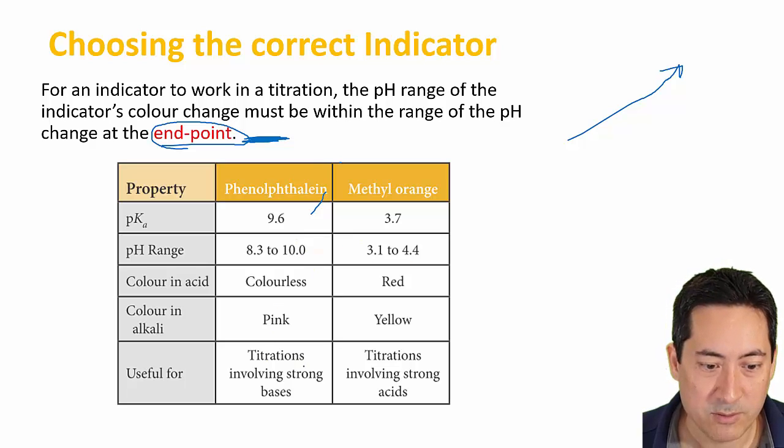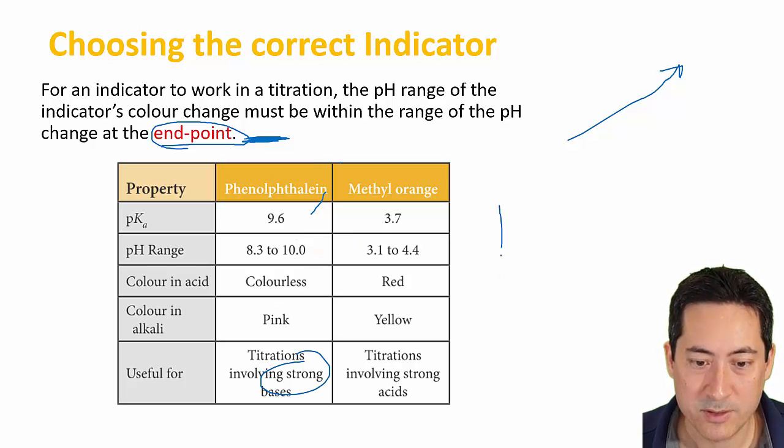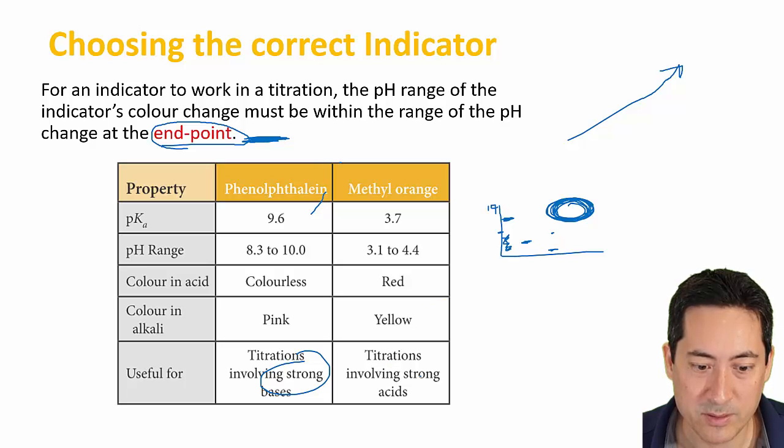With strong bases, the pH will be up here around 14, versus about 7. Because the pKa is higher, you can't use phenolphthalein with weak bases, so it has to be with strong bases. With methyl orange, because the pKa is down here, you can use it with strong acids and strong or weak bases, but you can't use it with weak acids and weak bases.